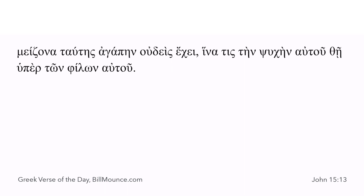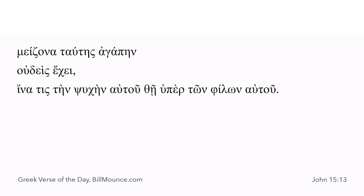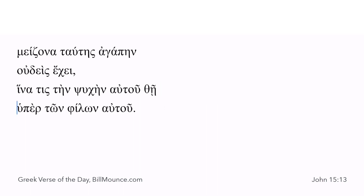Interesting word order. Let's start with the subject and get it out there. No one has — and then here's your dependent clause — in order that someone, his soul or his life, might place. And 'tithemi' is a very varied word in terms of its meaning, so you have to determine it according to context, and then you have a prepositional phrase. If we were to do the first part in English word order, it would be: no one has love — and what kind of love? A love that's greater than this, and the 'this' is the laying down of his life, this whole idea.